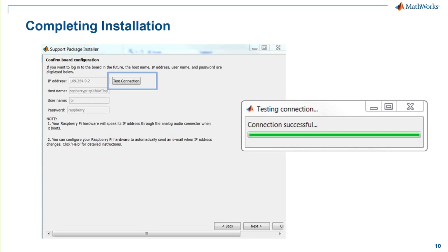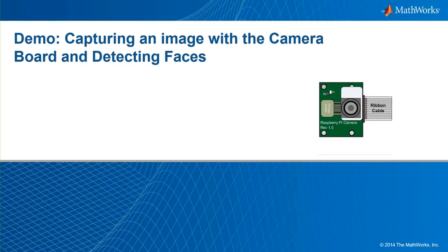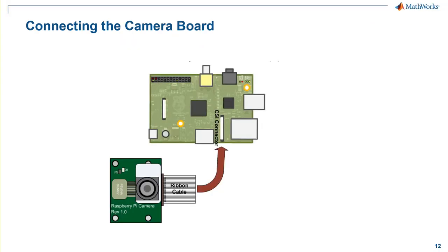Now that we have completed the install steps, we are ready to start using the Raspberry Pi Camera Board with MATLAB. In this demo, we will use the Camera Board accessory for the Raspberry Pi to capture images and use MATLAB to search for faces. With the power disconnected, connect the Camera Board to the CSI connector on the Raspberry Pi, making sure the blue part of the ribbon is facing the Ethernet connector. Once connected, turn the board back on.